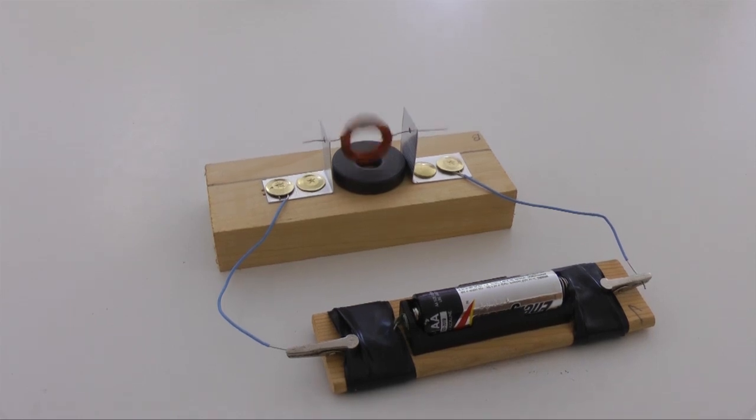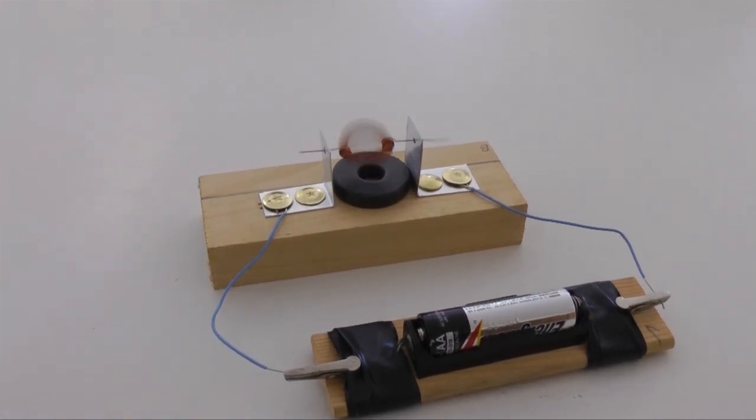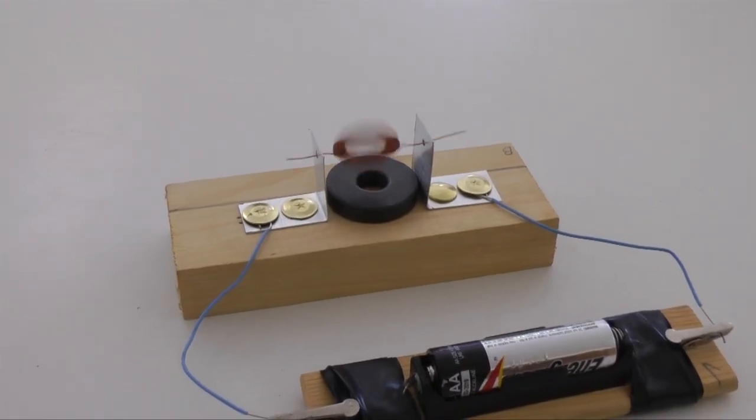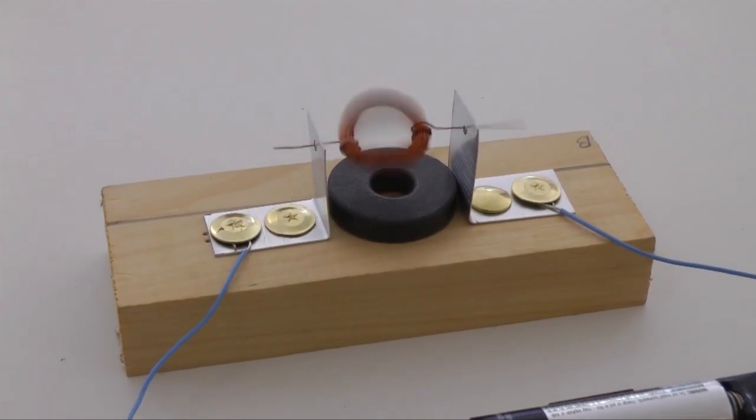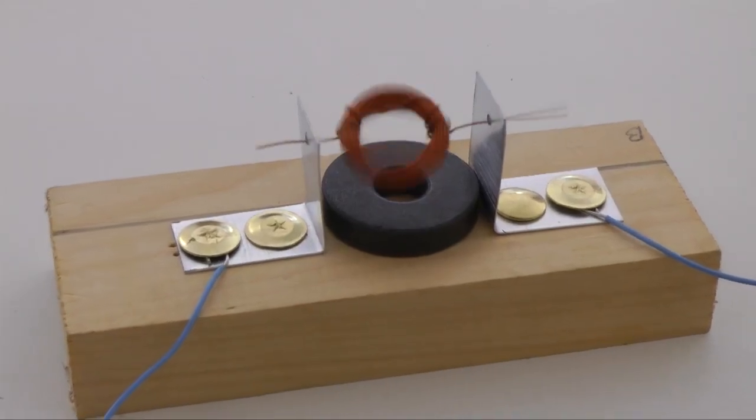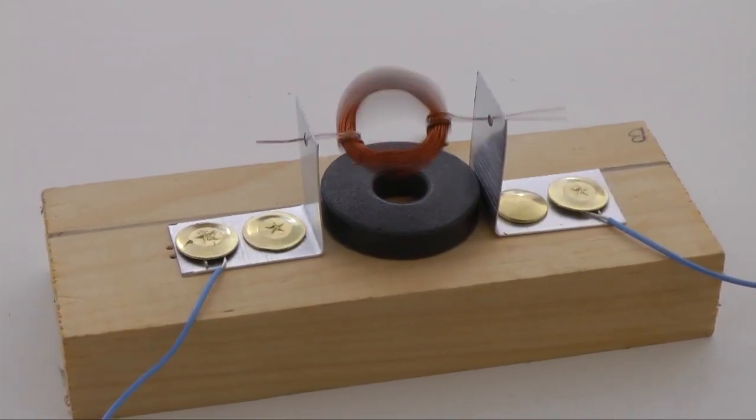If your motor refuses to start, disconnect the battery and let the coil cool for 2 minutes. Resand the coil leads and check to make sure the leads are straight and centered. Sometimes flipping the permanent magnet or reversing the battery leads will help.